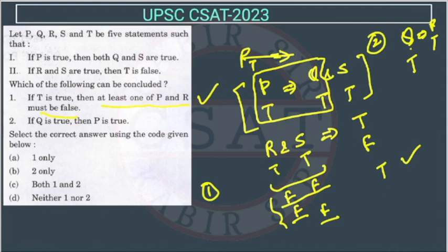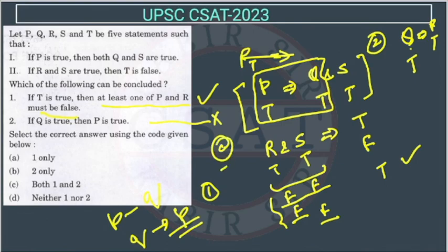But we can say that if P is false, but the reverse is true. Because of P, Q is happening, but it does not mean that because of Q, P will happen. So this statement is wrong. So the answer will be only option A.